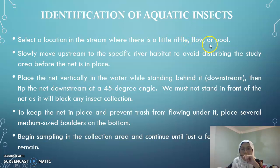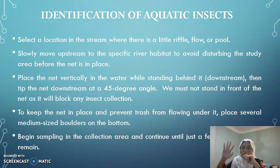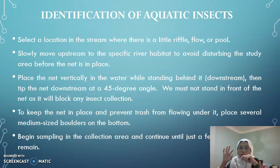For identification of aquatic insects: first, select a location in the stream with little river flow or a pool. Second, slowly move upstream to the specific river habitat to avoid disturbing the study area before placing the net. Third, place the net vertically in the water while standing behind it downstream, with the tip at 45 degrees — do not stand in front of the net. Place medium-sized boulders at the bottom of the net to keep it in place.